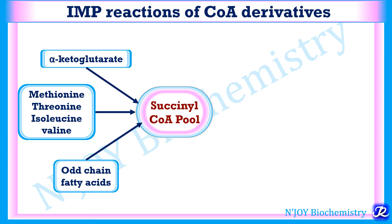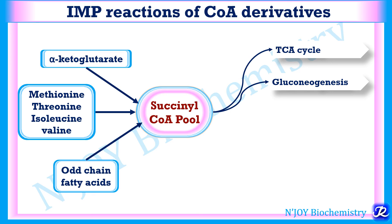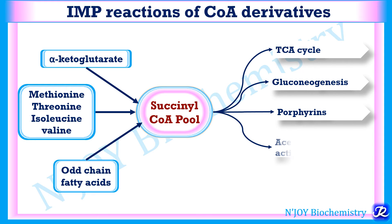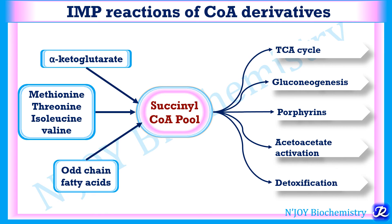The fates of succinyl-CoA include: serving as a TCA cycle intermediate; supporting gluconeogenesis, since further TCA cycle reactions produce oxaloacetate which feeds into gluconeogenesis; combining with glycine as the first step of heme synthesis to form delta-aminolevulinic acid, so succinyl-CoA is required for porphyrin and heme synthesis; activation of acetoacetate for ketone body utilization in starvation and uncontrolled diabetes mellitus; and detoxification reactions.